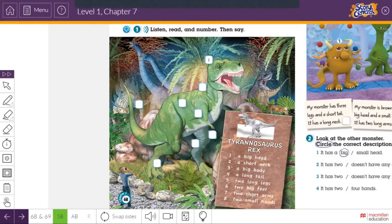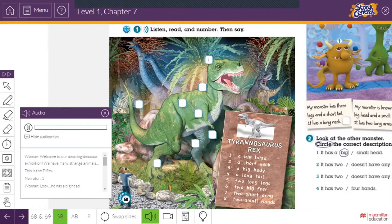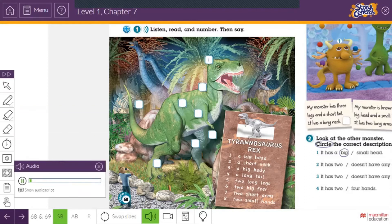Let's number. We'll give numbers, number one up to number eight. Number one is done for us, a big head. For the next numbers, please listen to the audio. Chapter 7, Lesson 1, Activity 1. Welcome to our Amazing Dinosaur Exhibition. We have many strange animals. This is the T-Rex.